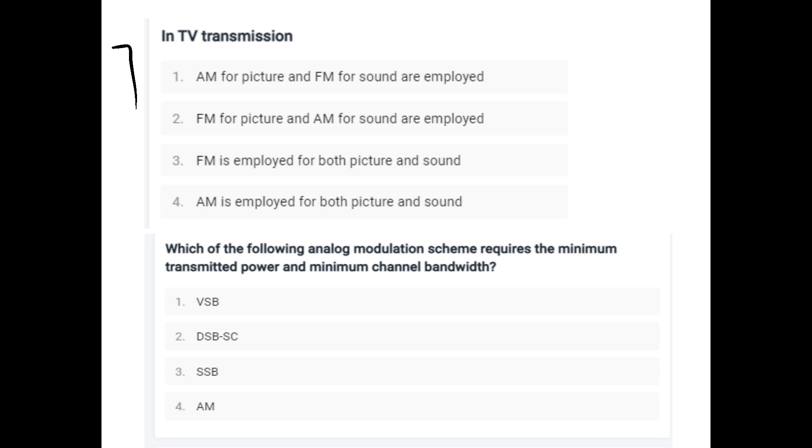Question six: TV transmission. AM for picture, FM for sound. FM for picture, AM for sound. FM is employed for both picture and sound. AM is employed for both picture and sound. It is option A: AM for picture, FM for sound are employed.